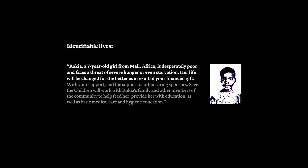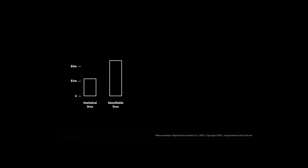As for identifiable lives, they used the story of Rokia — a seven-year-old girl from Mali, Africa, desperately poor and facing a threat of severe hunger or even starvation. "Life will be changed for the better as a result of your financial gift." When statistical lives were described, the mean donation was just over a dollar. When the identifiable life was presented as a story, donations were more than double. So people are willing to give more than double the money to save one person than to save many.